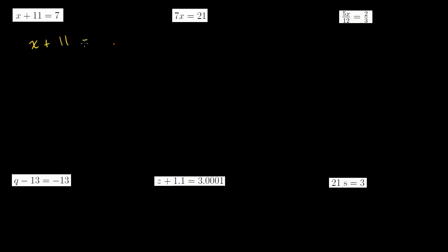So this first equation: x plus 11 is equal to 7. This is saying some number plus 11 is equal to 7. You may already be able to do this in your head — what do I have to add to 11 to get to 7? It's going to have to be some type of a negative number, but we're going to learn how to do this systematically.